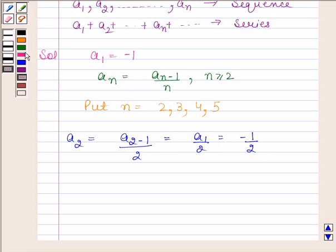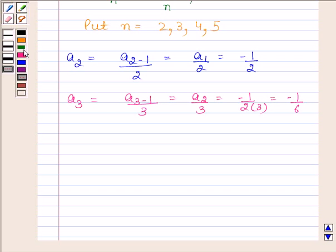By substituting n as 3 we get a₃ = a₃₋₁/3. This is equal to a₂/3, and a₂ = -1/2, so we have -1/2 × 3 and this is equal to -1/6.